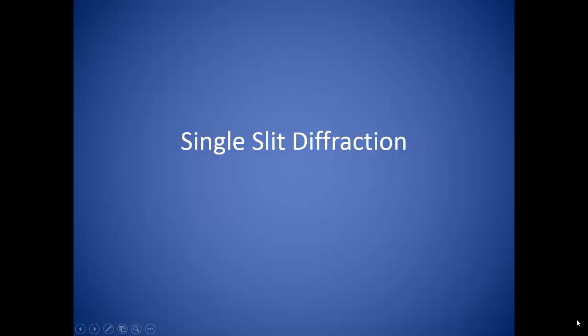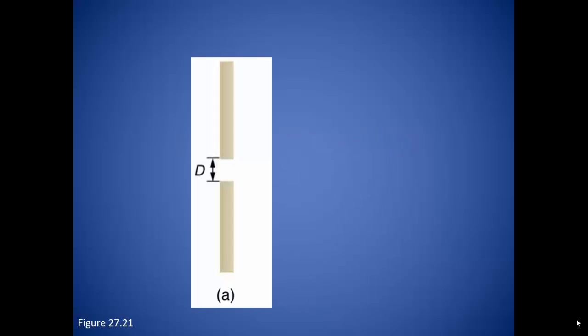Light passing through a single slit gives us a diffraction pattern that's quite different from our double and multiple slit situations. Say we have a single slit and coming in from the left we have in-phase monochromatic light. You might expect a nice round curve projected on the screen where the light is just kind of spread out around the edges — but that isn't quite what we get.